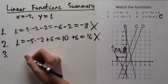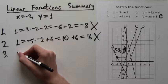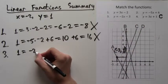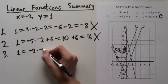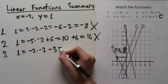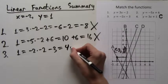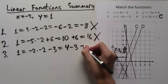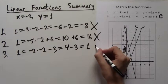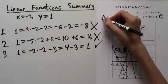So line A must be the graph of formula 3. And we are about to check just to make sure that this point does lie on formula 3's line. So we plug in and get negative 2 times negative 2 is positive 4, and then minus 3 equals 1. 1 equals 1. It's true. So A corresponds to 3.